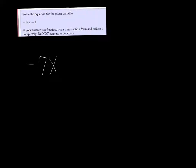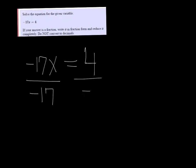We're going to solve negative 17x equals 4. I want x all by itself — this negative 17 is multiplied by x even though there's no symbol in between. So to undo multiplication, I divide both sides by negative 17.